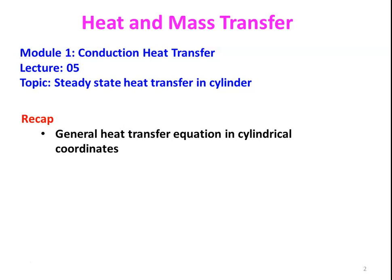We recap from the previous lectures. We derived the general heat conduction equation in cylindrical coordinate system and we simplified for different situations. Now referring to the general heat conduction equation for cylindrical coordinate system, we will apply it to a particular situation: steady state heat transfer in a cylinder.